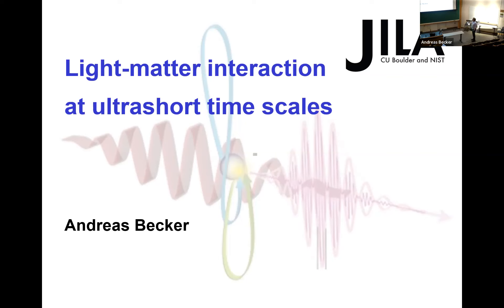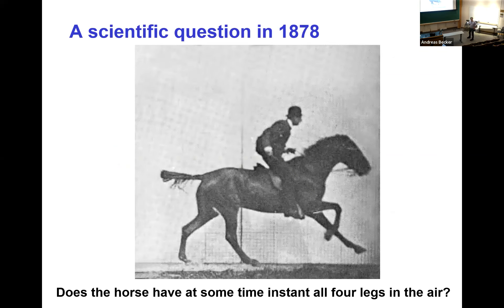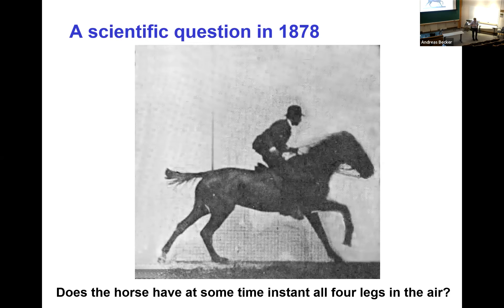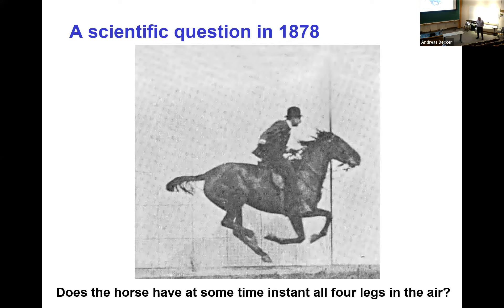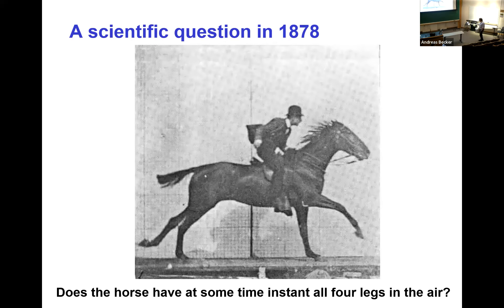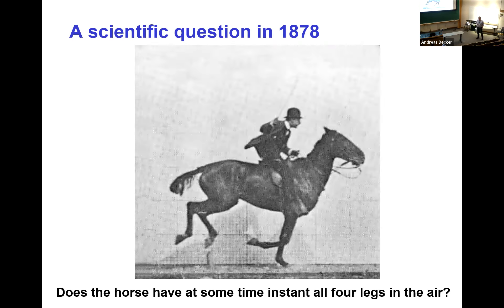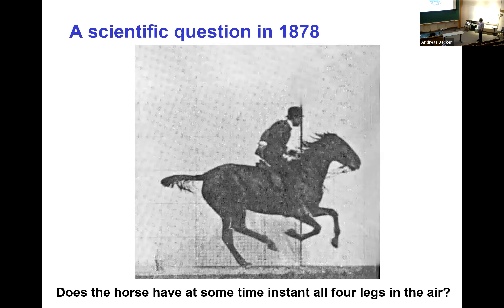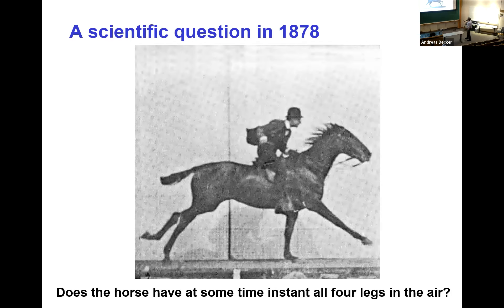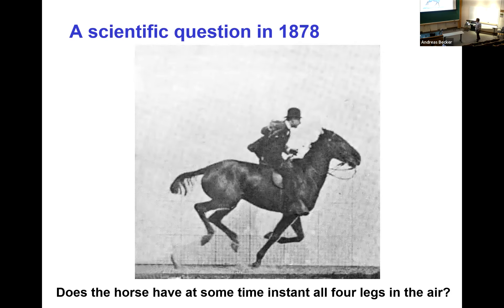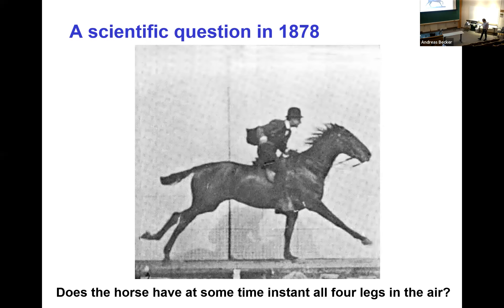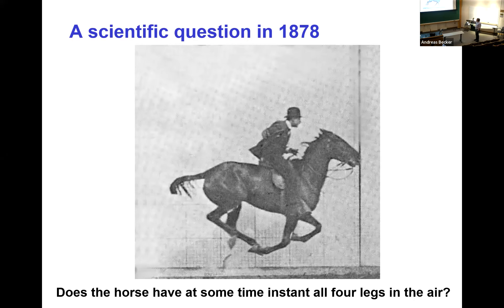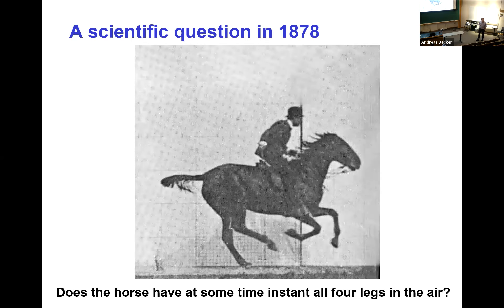When I talk about ultra-short timescales, there is a very famous example from long ago that I like to show at the beginning. It's a kind of scientific question that 150 years ago people had — although it was actually a bet between two horse owners. The question was: if a horse is galloping, does it at some instant have all four legs in the air? They could not agree on this, because you cannot resolve the motion fast enough with the eye. To resolve such a motion, you have to take photos — snapshots. That was actually the start of ultra-short photography.